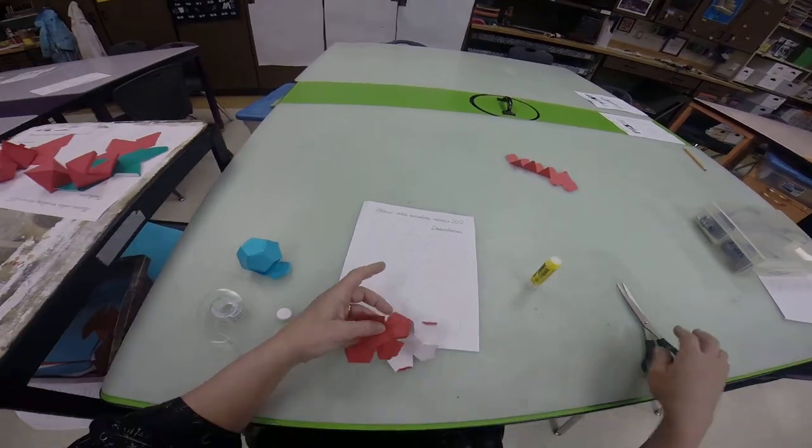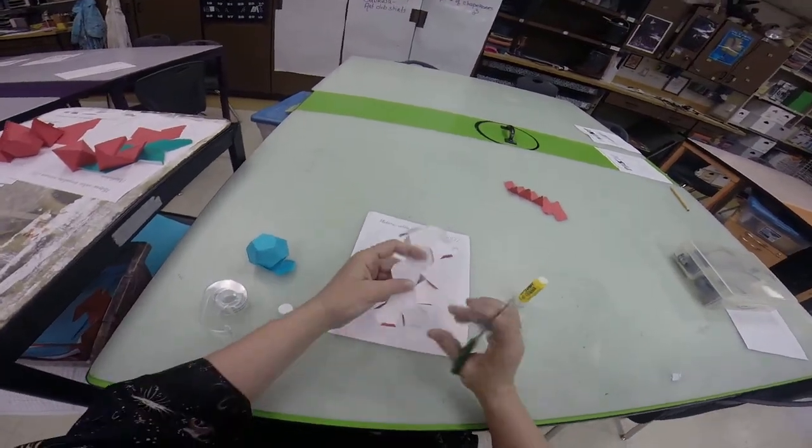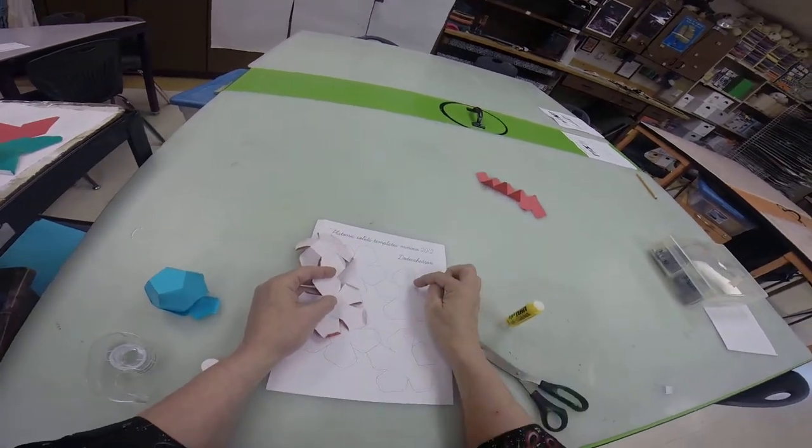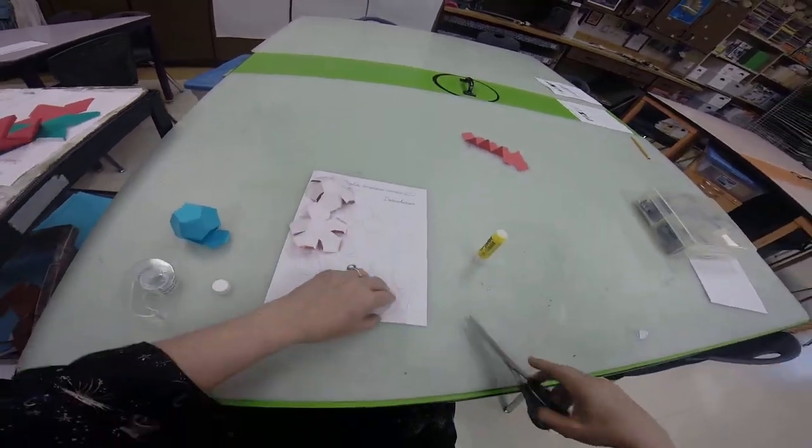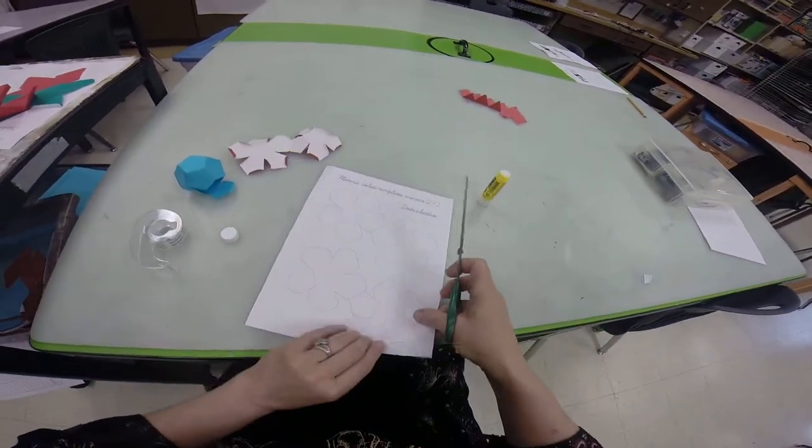So you're going to cut on the outside. And on this one, like the last one, you have to cut this little piece right here to release that tab.